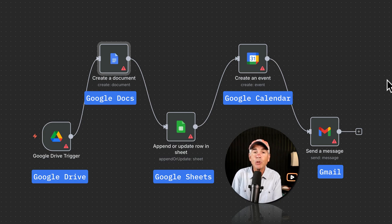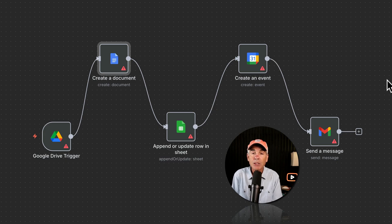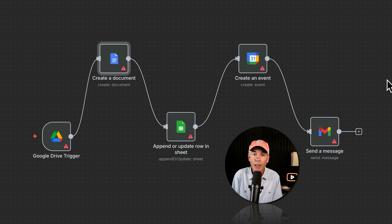We want to be able to use our Google services in another application, N8N. But Google just doesn't let any application use your services without getting permission. So that is what we're doing today — we're going to Google and we're going to register our connection and get permission.